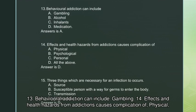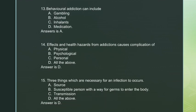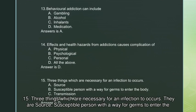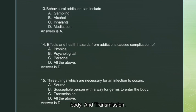Question 14: Effects and health hazards from addictions cause complications that are physical, psychological, and personal. Question 15: Three things necessary for an infection to occur — a source, a susceptible person with a way for germs to enter the body, and transmission.